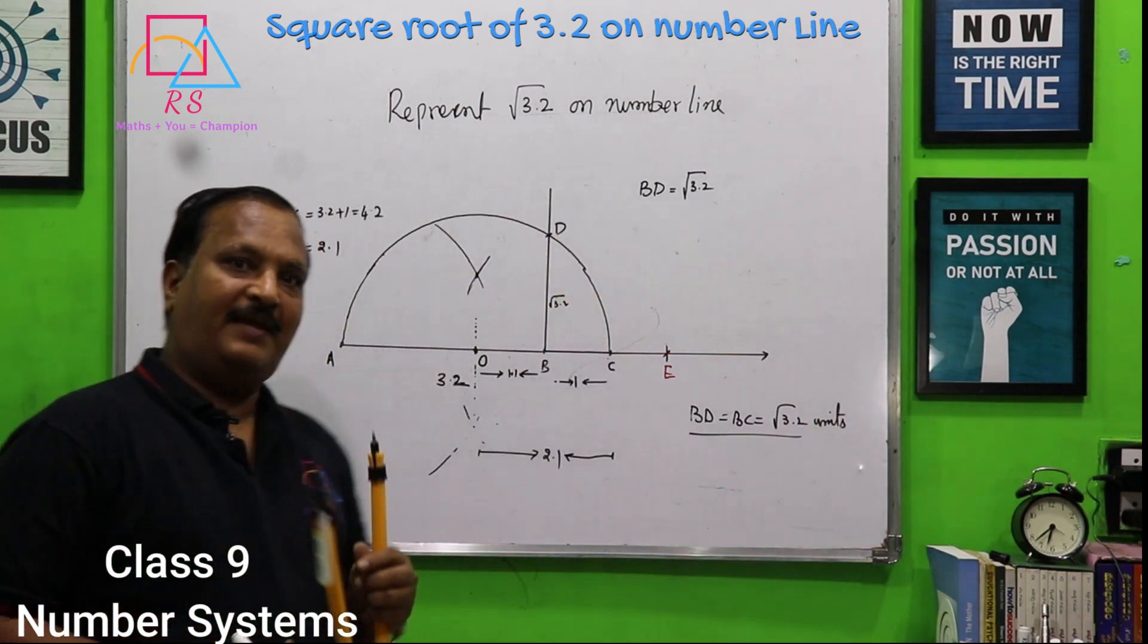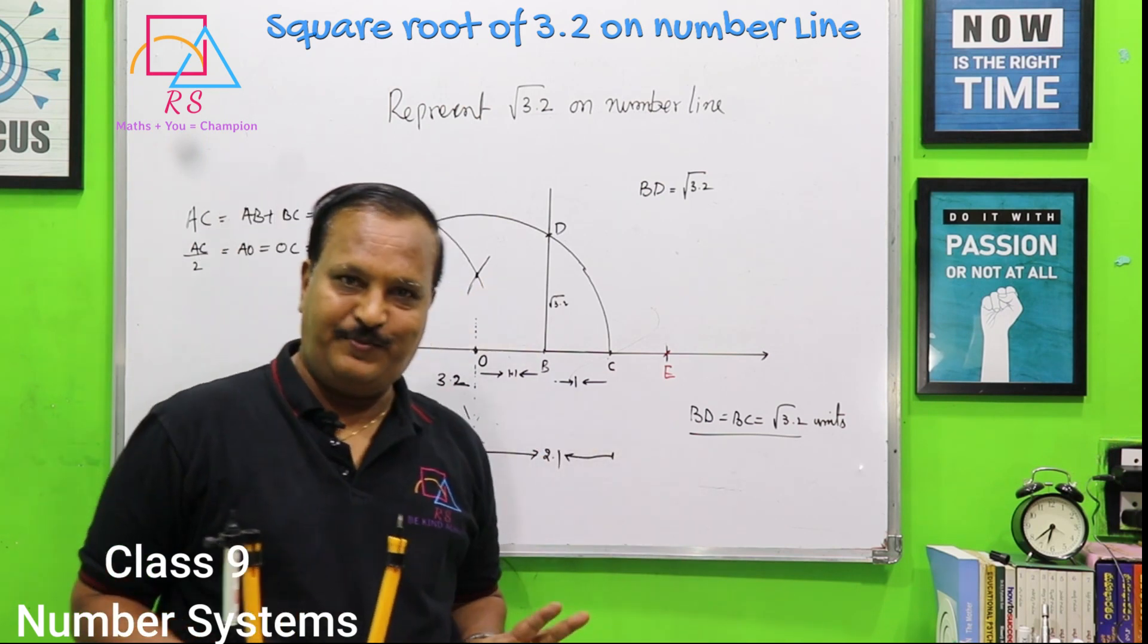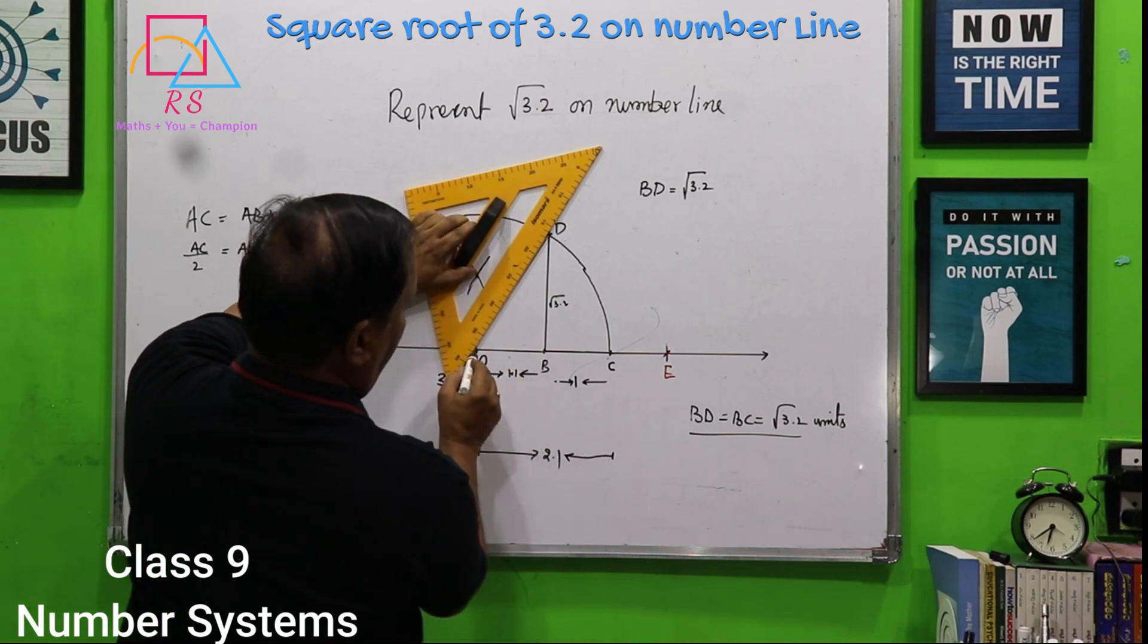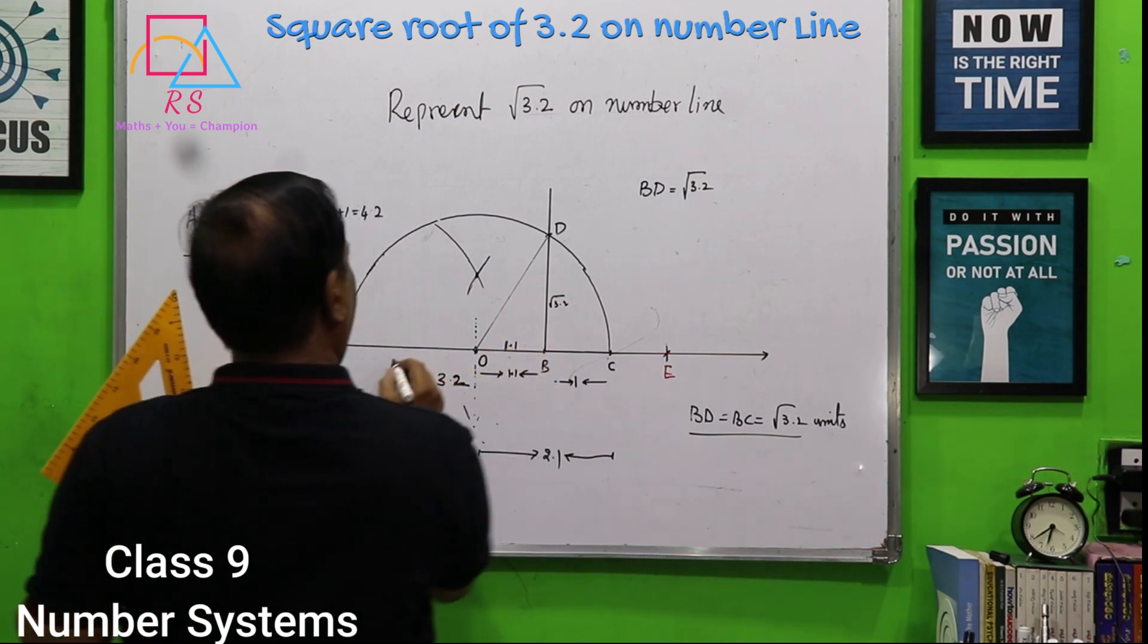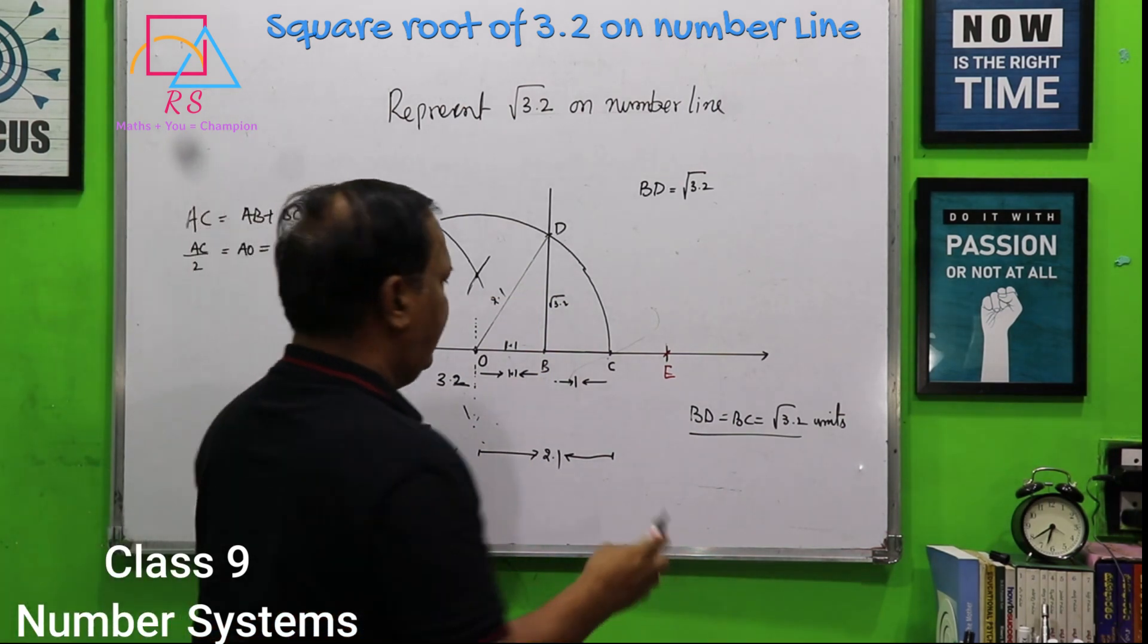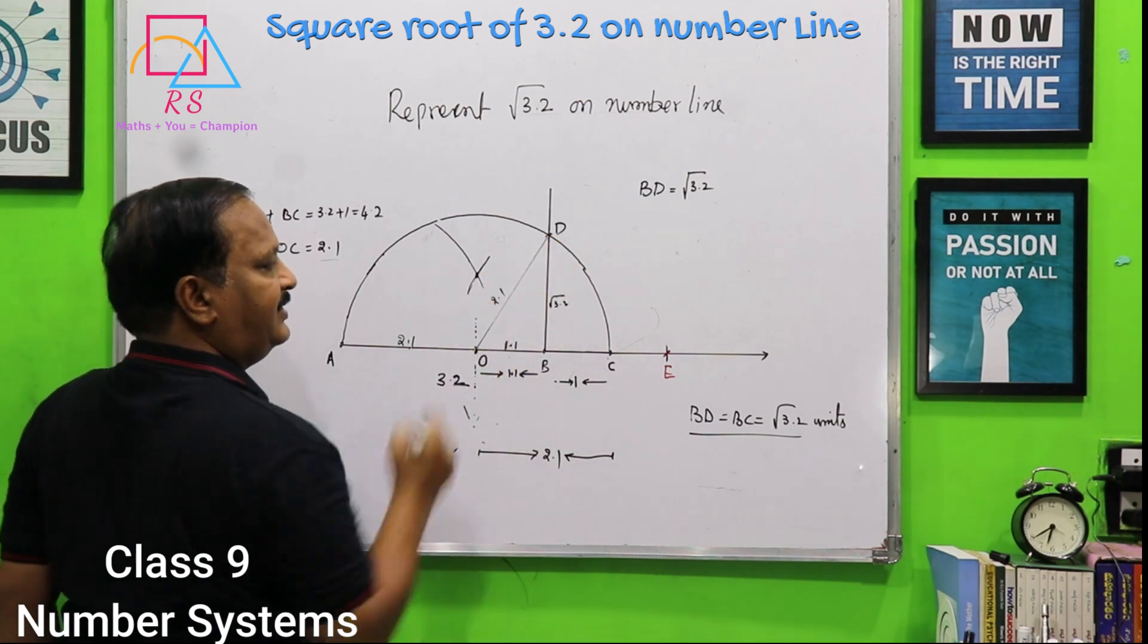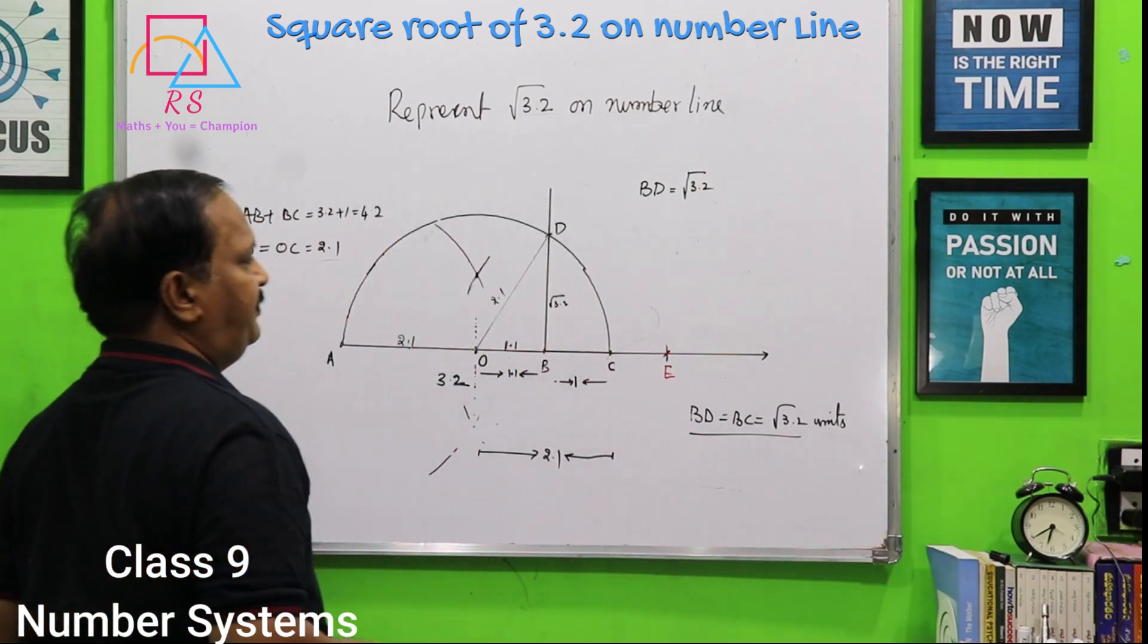I am not writing centimeters, I am not writing inches also. Because I have taken unit. Now how BD is root 3.2. Look at this. I have joined OD. OD is nothing but radius, which is 2.1. So, OA is equal to 2.1 and OD is equal to 2.1. Now we have to use Pythagoras theorem.